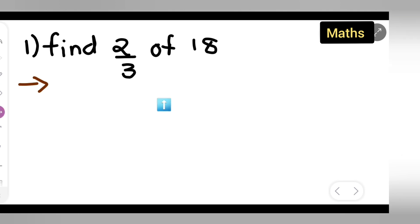First, write down the question: multiply 2 upon 3 of 18. So first you will have to write down 2 upon 3, then multiply it by 18. Now, we can write this in this form: 2 upon 3 multiplied by 18 upon 1.